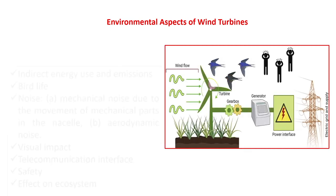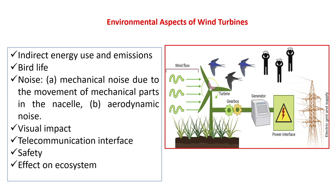Environmental aspects of wind turbines include indirect energy use and emissions, impact on bird life (birds cannot fly freely when many turbines are installed), mechanical and aerodynamic noise, visual impact, telecommunication interference, safety concerns, and effects on the ecosystem. These aspects must be considered when installing large wind farms.